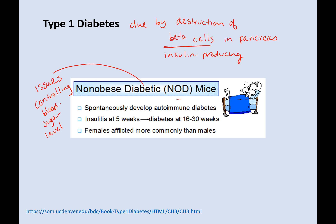In these mice, if you want to find out more there's a link about them, you usually see insulitis — this is microscopic. At about five weeks, you start to see destruction of the beta cells. Then you'll see diabetes, which is this lack of sugar control, at 16 to 30 weeks. So that's their one mouse model.